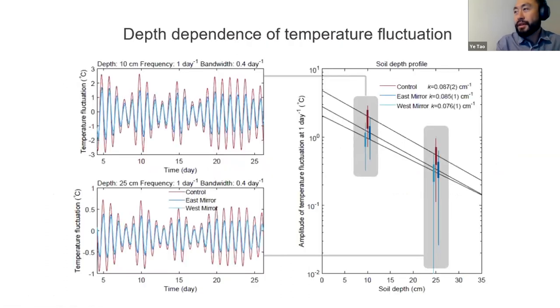We can analyze the signal band-passed at day minus one frequency. We fit the data to just exponential decay in soil depth. For different perturbations, the decay constant for this rather high frequency component in this field is roughly 0.08 or 0.09 per centimeter.